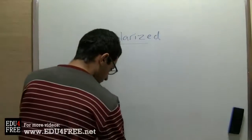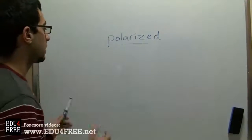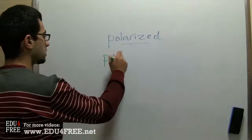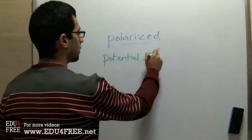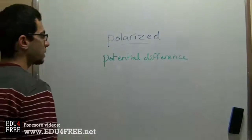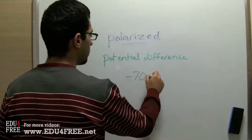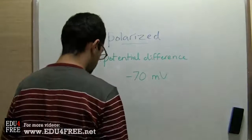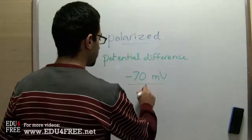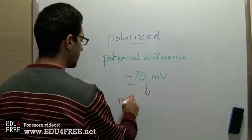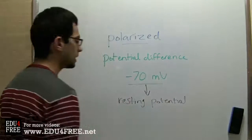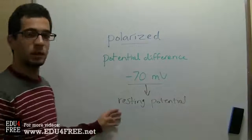The presence of positive ions on the outside and negative ions on the inside leads to a potential difference between the positive and negative ions. This potential difference is negative 70 millivolts. The name of this potential difference is the resting potential, because it's related to the resting state of the axon.